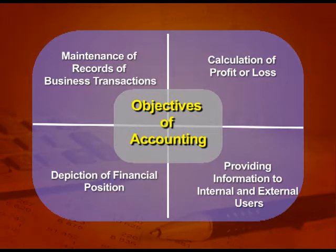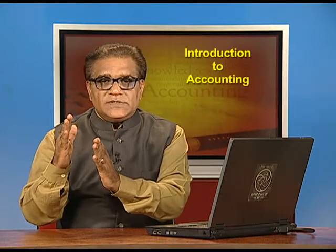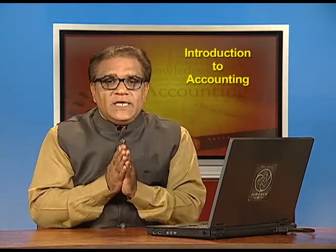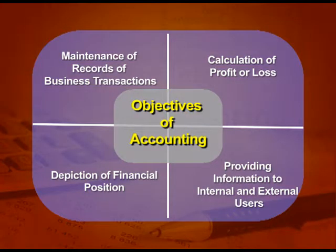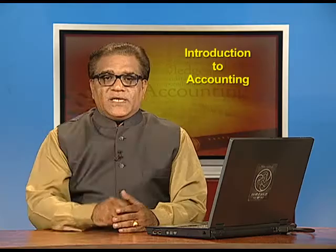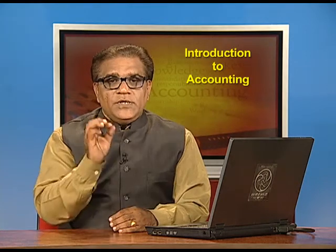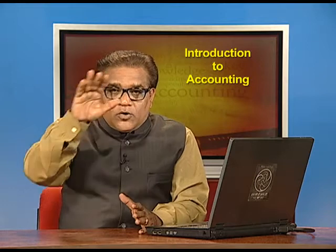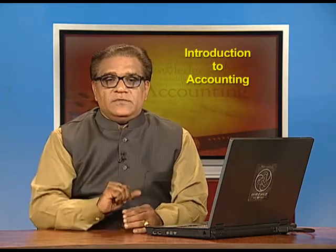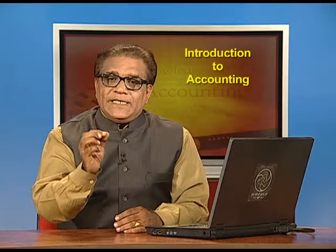The second point is calculation of profit or loss. If we record our expenses and incomes in a proper manner, only then we will be able to calculate the profit or loss. Third point is depiction of financial position. Correct financial position will be depicted only when we have good accounting records. Financial position means the statement of assets and liabilities, and it will be depicted after all accounts are prepared properly. The last objective is providing information to internal and external users.